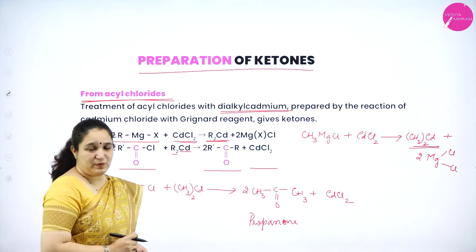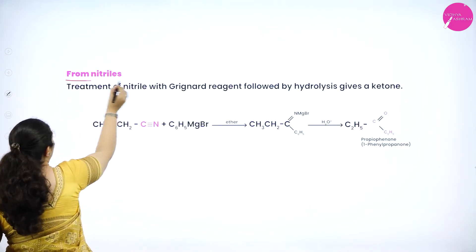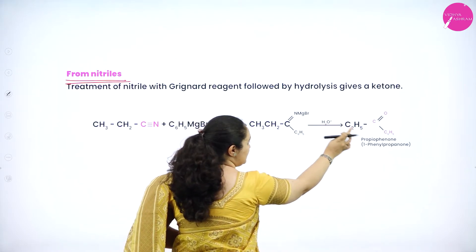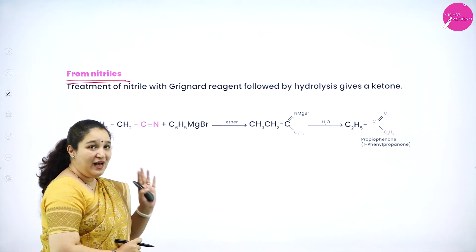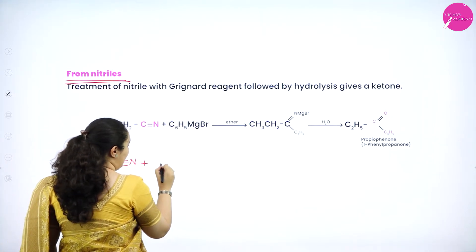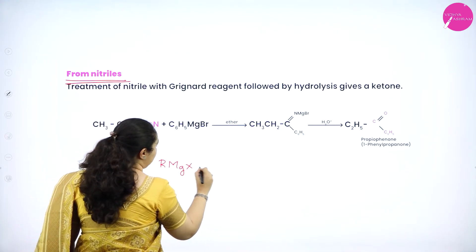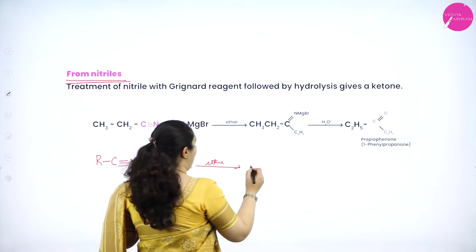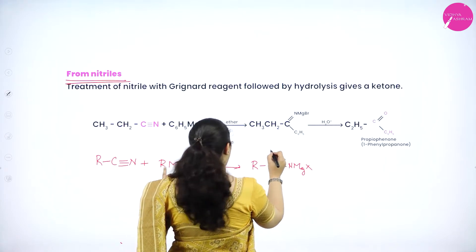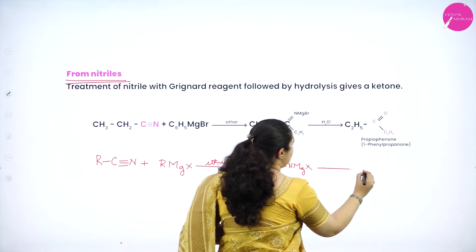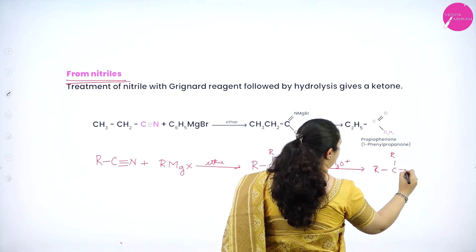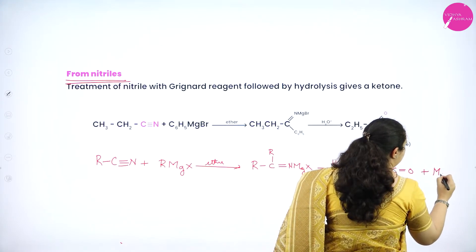This is the first method of preparation of ketone. The next method is from nitrile. We take nitrile, which on hydrolysis gives ketone. The general equation: take R–C≡N (nitrile) plus Grignard reagent R'MgX in the presence of ether. What we get is R–C(=NMgX)–R', and this on hydrolysis gives R–C(=O)–R' plus Mg(OH)X and NH3.